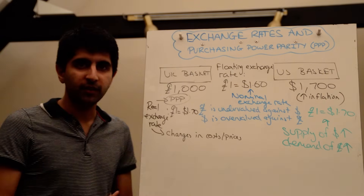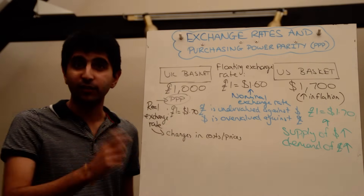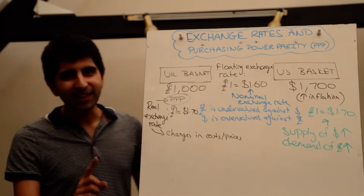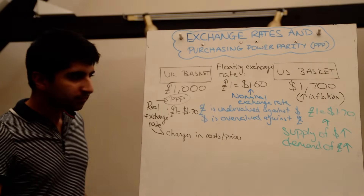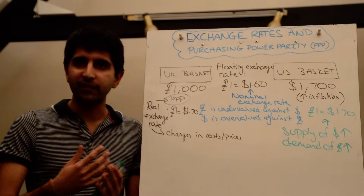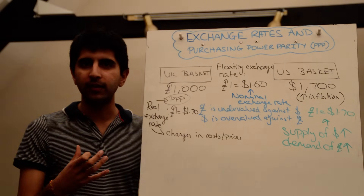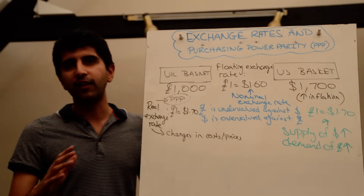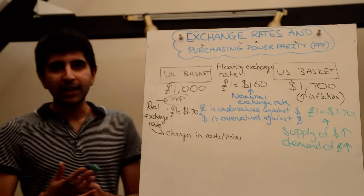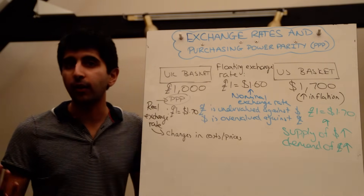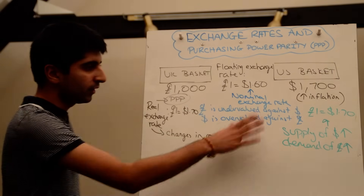The dollar depreciates relative to the pound, the pound appreciates relative to the dollar, and we get to £1 equals $1.70 — reflecting purchasing power parity and the real exchange rate. In theory, that's what should happen. In reality, though, if a currency is undervalued or overvalued, we don't really see this self-adjustment. Trade effects should change the demand and supply for given currencies and take a currency back to purchasing power parity, but in reality it's not trade effects that dominate — it's speculative flows. Speculation actually leads to the final exchange rate value, and can maintain an undervalued or overvalued currency.